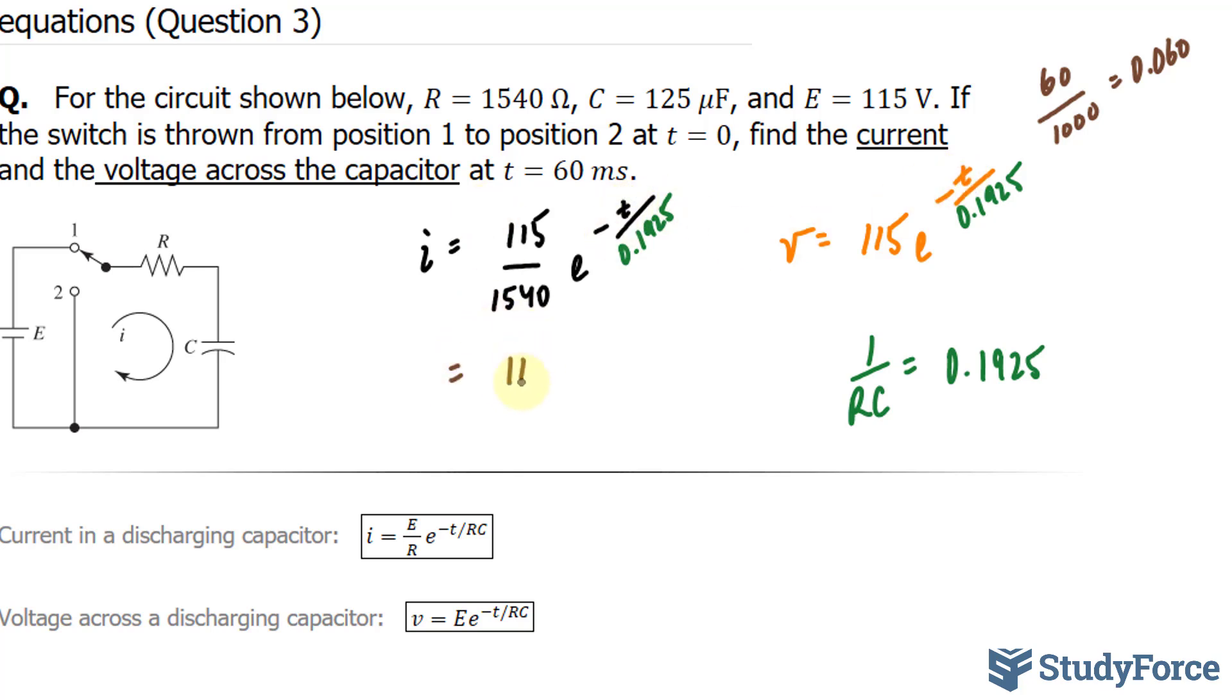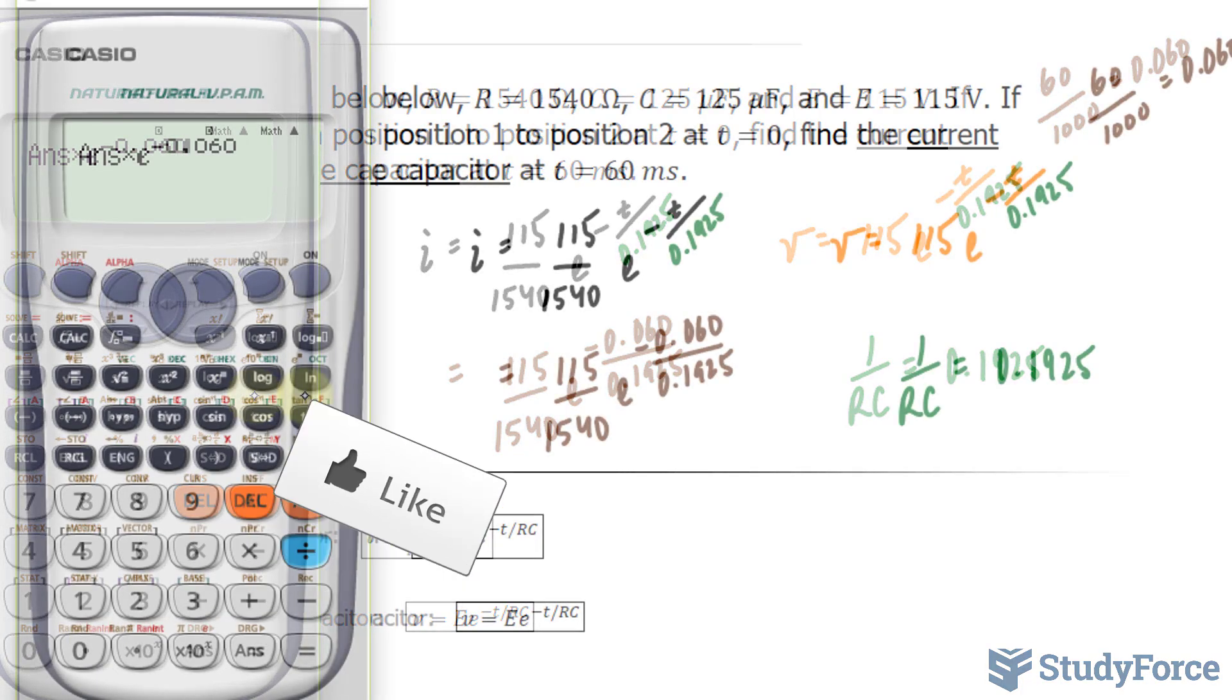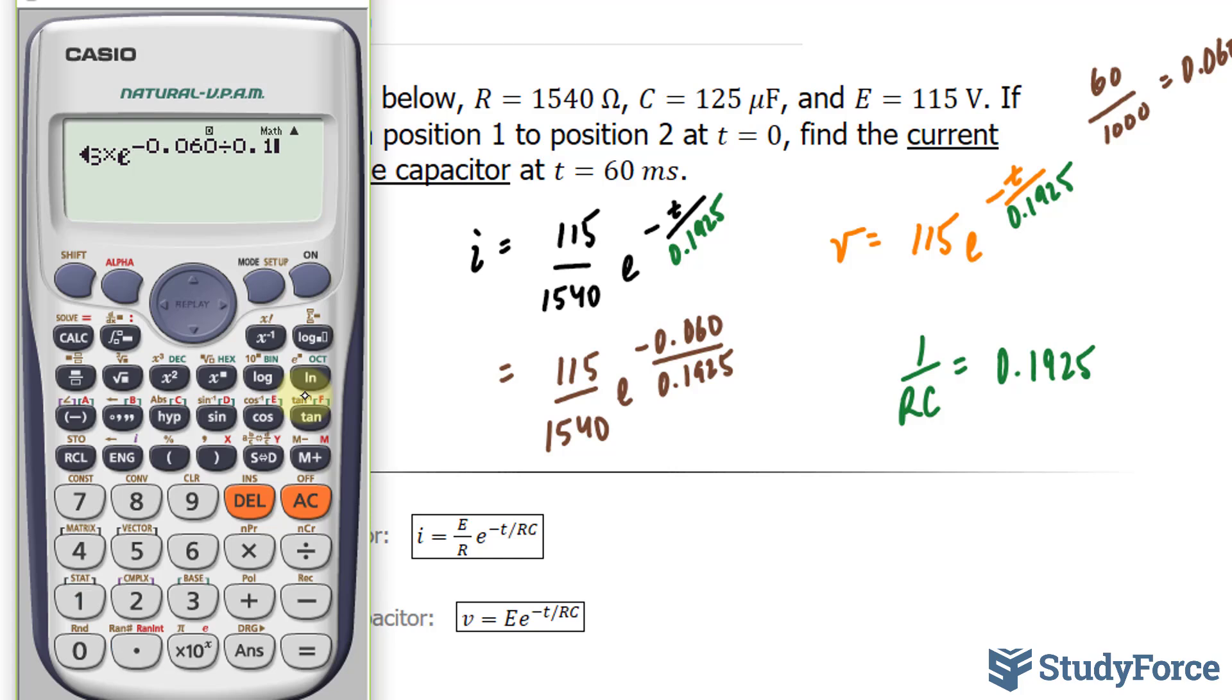We have 115 over 1540 times E to the power of negative 0.060 over 0.1925. Using my calculator, 115 divided by 1540, multiplied by E to the power of negative 0.06 divided by 0.1925. And this gives us 0.0546.